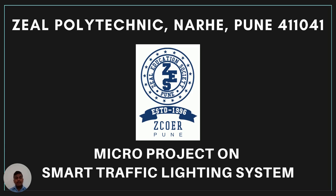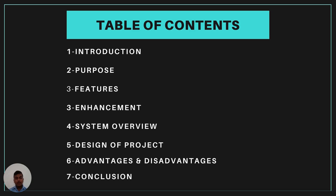Hello everyone, my name is K Sarvesh. I am pursuing a diploma in Electrical Engineering. Me and my group make a project presentation on Smart Traffic Lighting System. In this project, we are going to know about what is the Smart Traffic Lighting System, purpose, features, enhancement, system and design of the project, advantages and disadvantages, and conclusion. Let's begin.